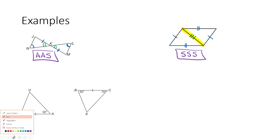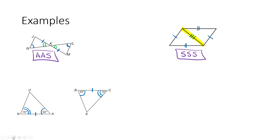Here's another one — more straightforward because there's nothing to figure out. We know side AN and side BC are congruent because they're marked with a tick mark. We're also told angle A is 50 degrees and angle B is 50 degrees, so those are congruent. And angle N is 70 degrees and angle C is 70 degrees. We've got three pieces: two angles and the side between them — that's angle-side-angle, ASA. These are congruent triangles.